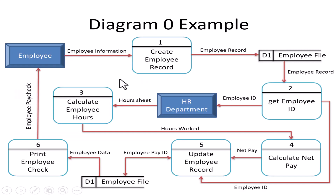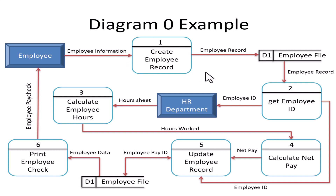Problem 6: a process cannot only receive data with nothing going out, or only send data with nothing coming in — some data must enter and some must exit. Furthermore, the data going in must be different from the data going out, because the process transforms the data.